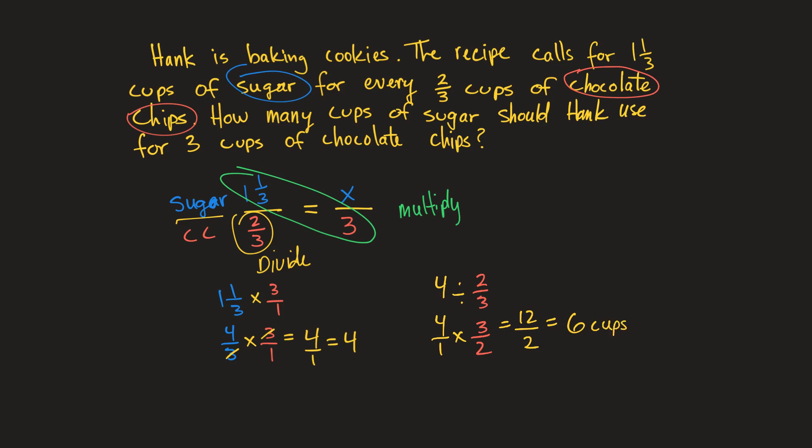Six cups of sugar. So once again, the plan is to first multiply these. Well, I guess first I would set up my proportion. I like to use my labels. I had sugar and I had cups of chocolate chips. And then I put in my values right there.